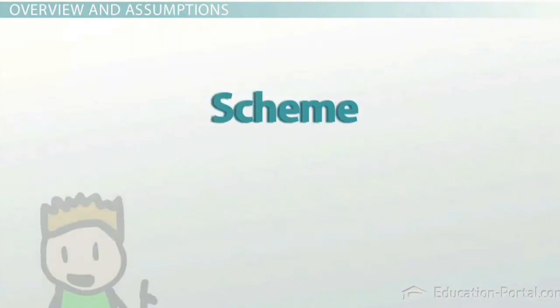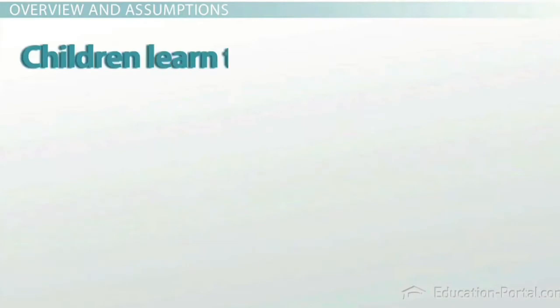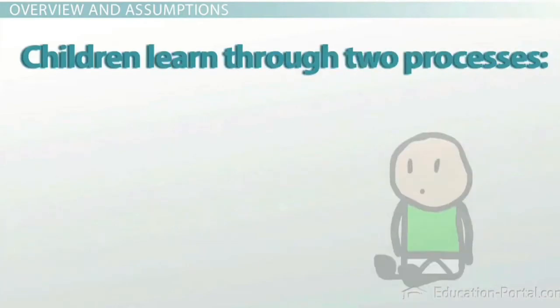The knowledge children acquire is organized into a scheme, or groupings of similar actions or thoughts. Over time, these schemes may change. They provide an important base level of information about particular events, objects, and information.